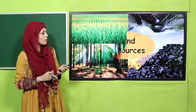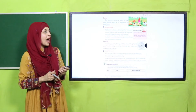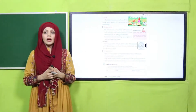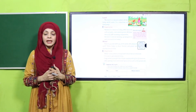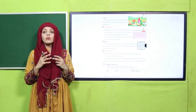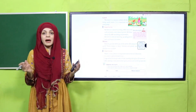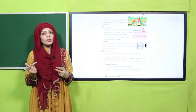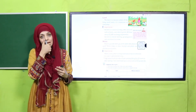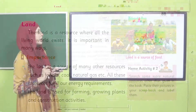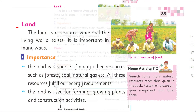We will also discuss land resource. Now quickly pause the video and open page number 88 in your books. I hope everybody has opened page number 88. We will do a reading about water resources and land resources, since a small introduction has been given about both. Now let's quickly read about land resource and water resource one by one and discuss their importance. Put your fingers where I will read. 'The land is a resource where all the living world exists.'